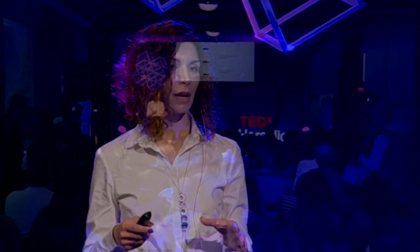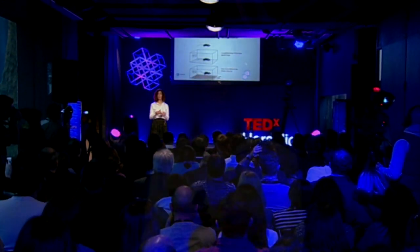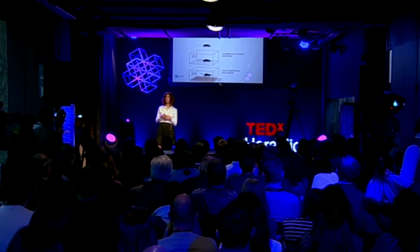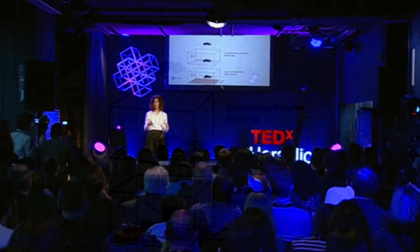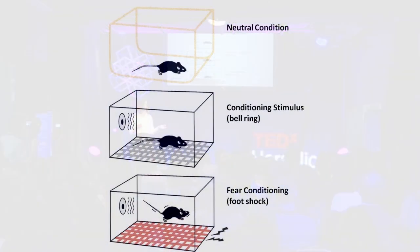How do they do that? They use a specific training protocol called fear conditioning. In this experiment, the animal — the mouse — is first placed into a neutral environment, like the yellow box shown here. Nothing happens. The animal is quite happy being there. After a while, a sound appears. The animal is still happy, going around and exploring the space.